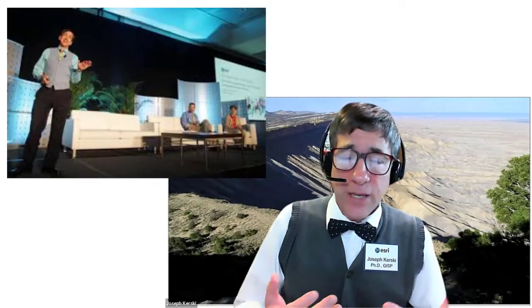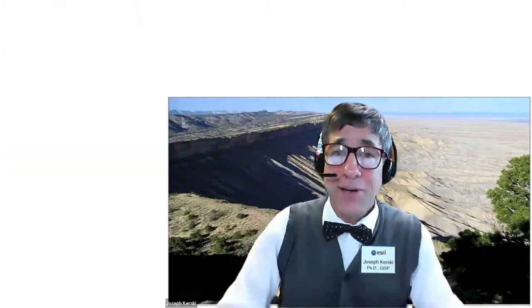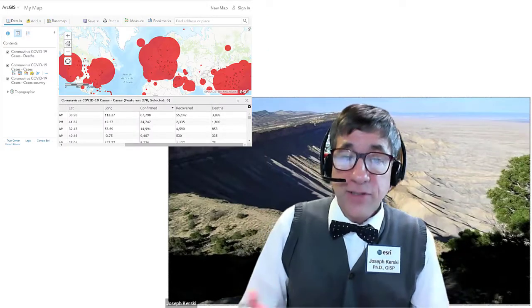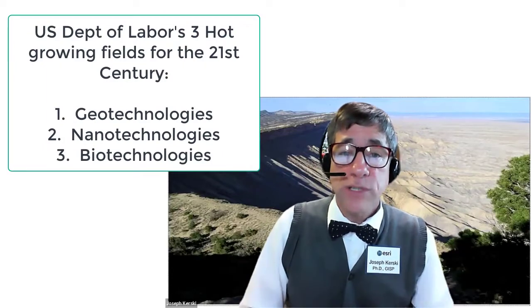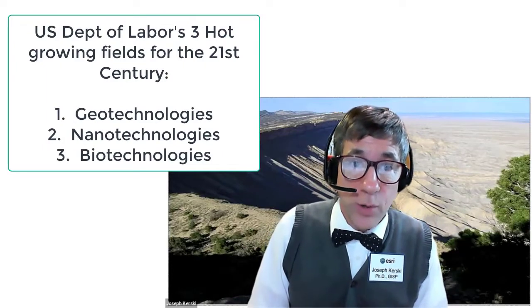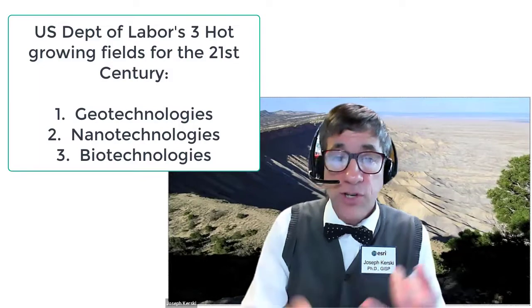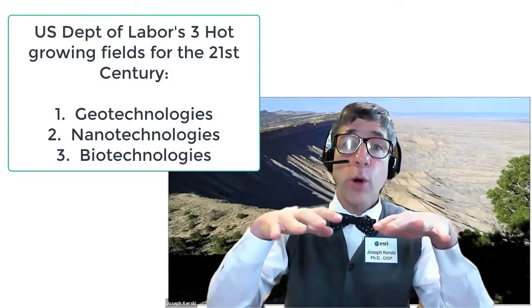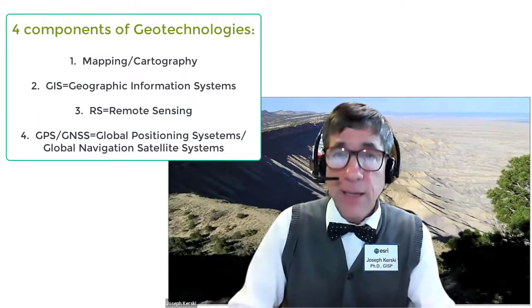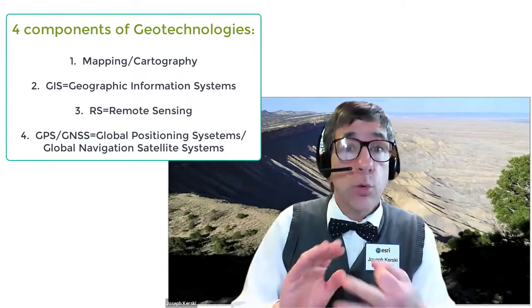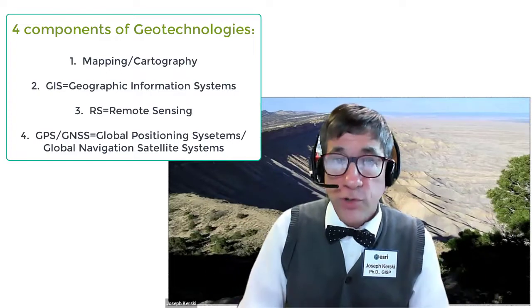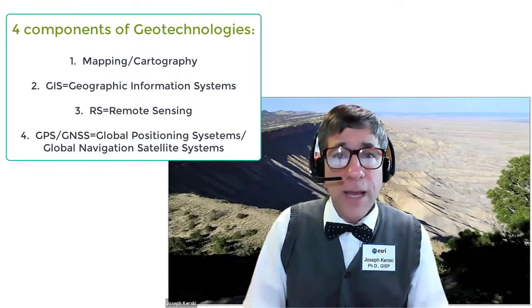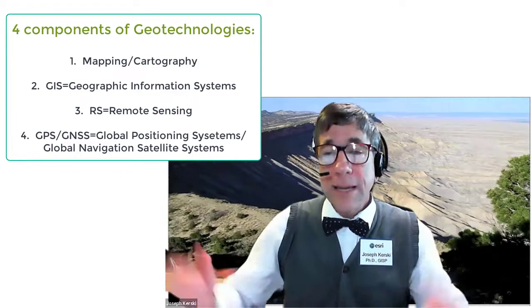Maps are tools for social and scientific inquiry, as well as for communication. Mapping has always been at the interplay of society and technology. The geospatial industry, of which mapping is a part, is emerging as one of the three most important new industries for the 21st century, along with nanotechnologies and biotechnologies. We will be firmly anchored in geotechnologies: mapping, geographic information systems, remote sensing — looking at the world from space, aircraft, or drones and UAVs — and GPS, or global positioning systems, more broadly known as global navigation satellite systems.